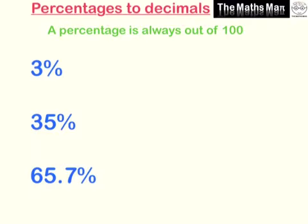Next, to convert percentages to decimals, we do a similar thing to before. 3% is the same as 3 out of 100, which is also the same as saying 3 divided by 100.